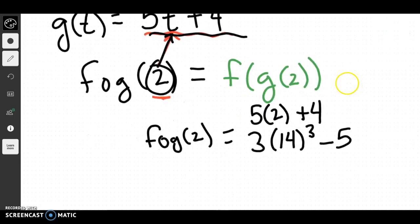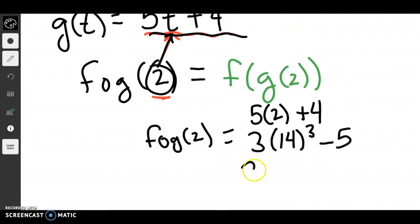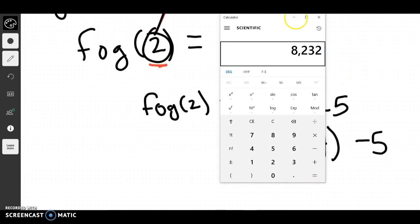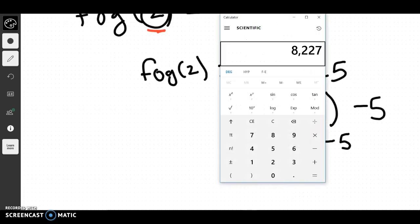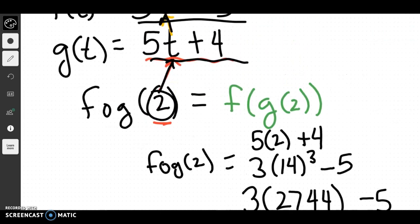Now, I don't know what 14 to the third is off the top of my head, so let's go 14 times 14 times 14. That's a big number. So 2, 7, 4, 4 minus 5. Again, I don't really want to do 3 times that big number in my head, so let's just times that by 3. So 8, 2, 3, 2 minus 5. Again, my mental math is not the best. So 8, 2, 2, 7. And that is the final answer. Again, the big idea behind a lot of these things is take the innermost thing, plug it in, plug it into that, and then keep plugging up the chain. Let's do one more.